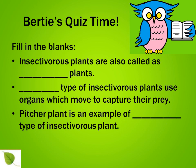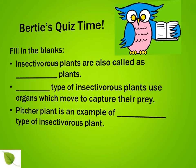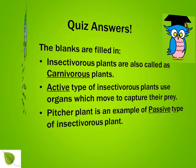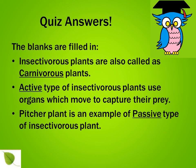Let's have a look at the solutions. Insectivorous plants are also called as carnivorous plants. Active type of insectivorous plants use organs which move to capture their prey. Pitcher plant is an example of passive type of insectivorous plant.